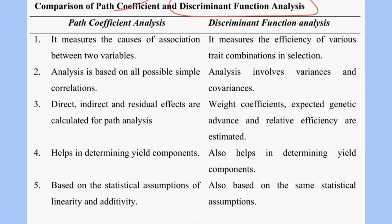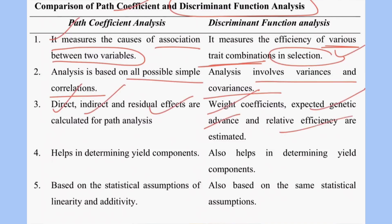Comparing discriminant function analysis to path coefficient analysis: in path coefficient analysis it measures the cause of association between two variables, while in DFA it measures the efficiency of various trait combinations during selection. PCA is based on simple correlation while DFA is based on variances and covariances. In PCA we calculate direct, indirect and residual effects, while in DFA we estimate weight coefficients, expected genetic advance, and relative efficiency.